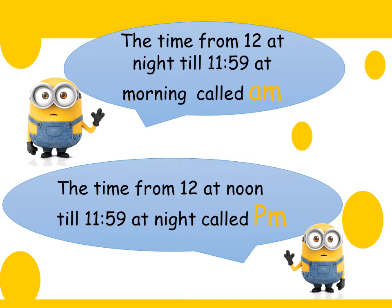Like the alarm in your mobile phones — do you read it? It's for example 7 AM, 8 AM, 2 PM. AM is the time from 12 at night up to 11:59 at morning. And the time from 12 at noon up to 11:59 at night is called PM.